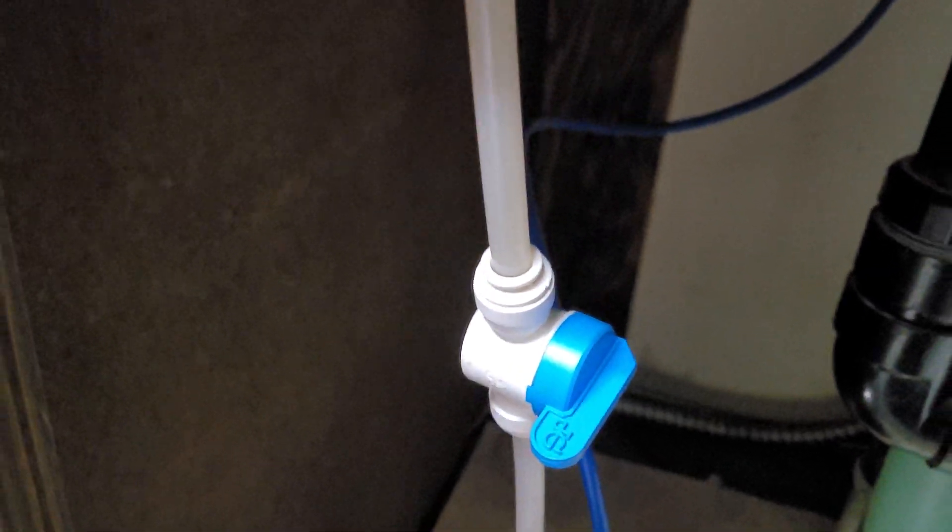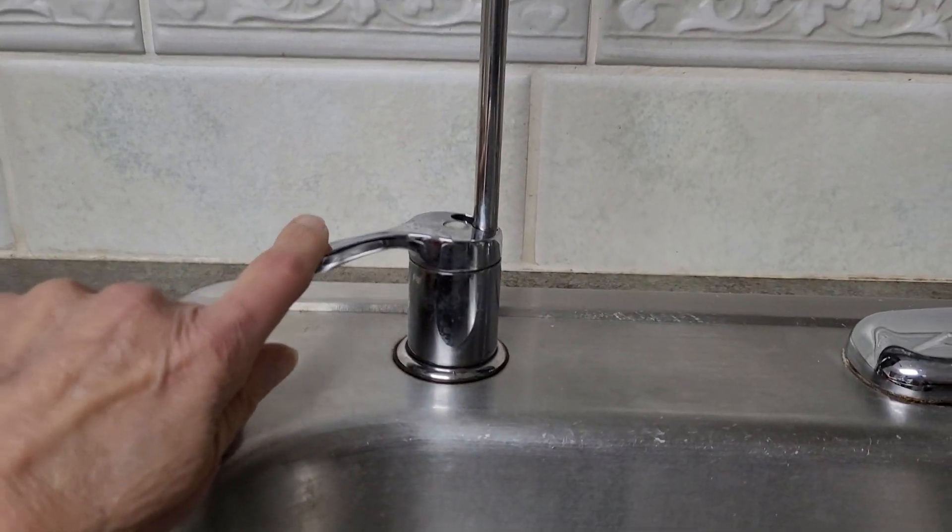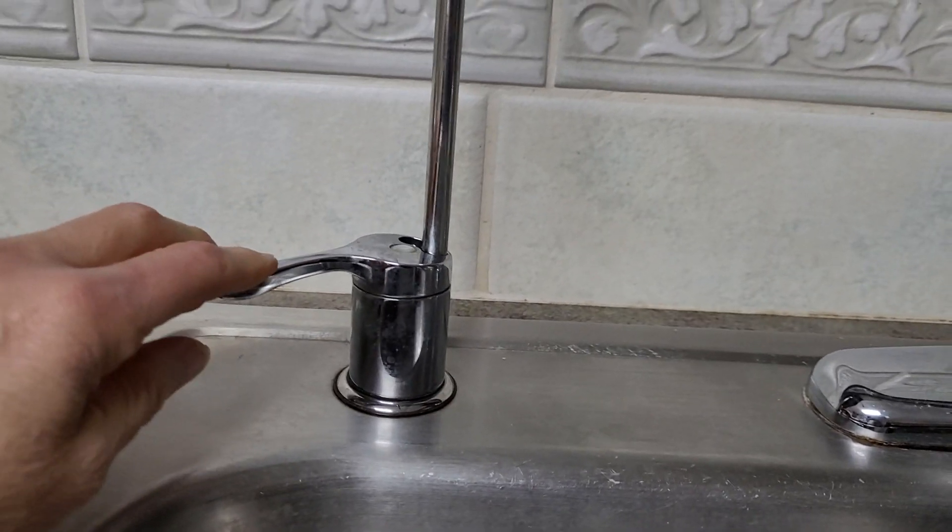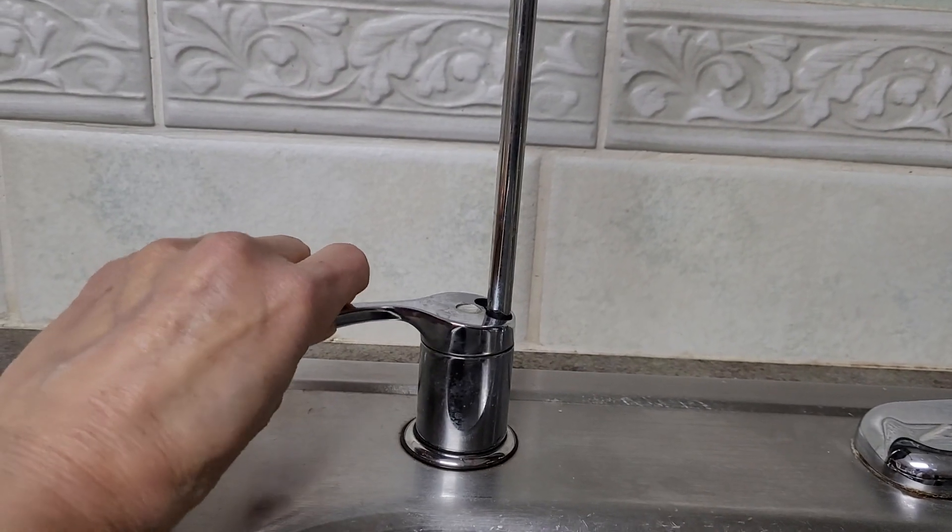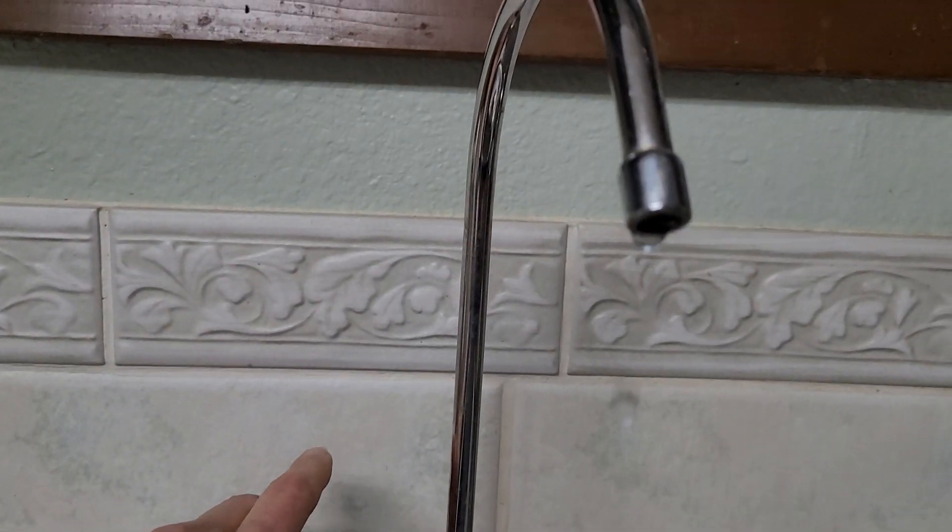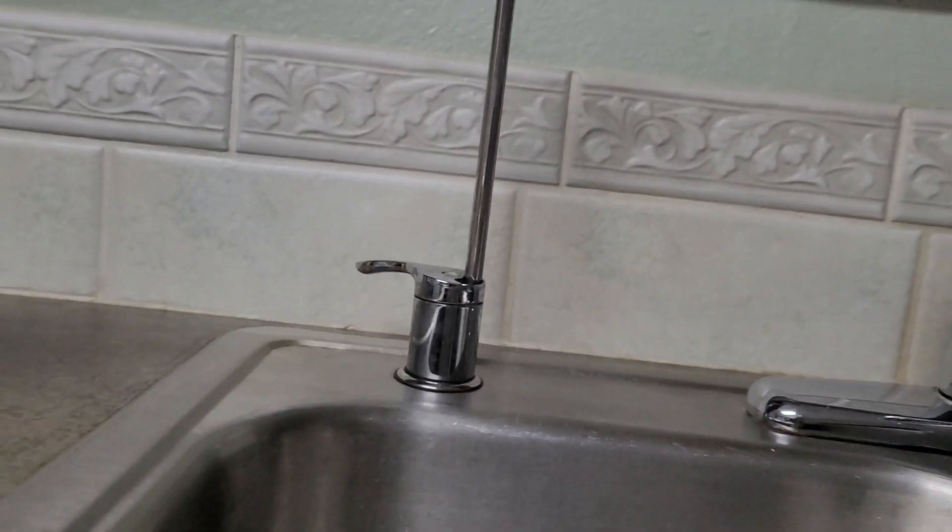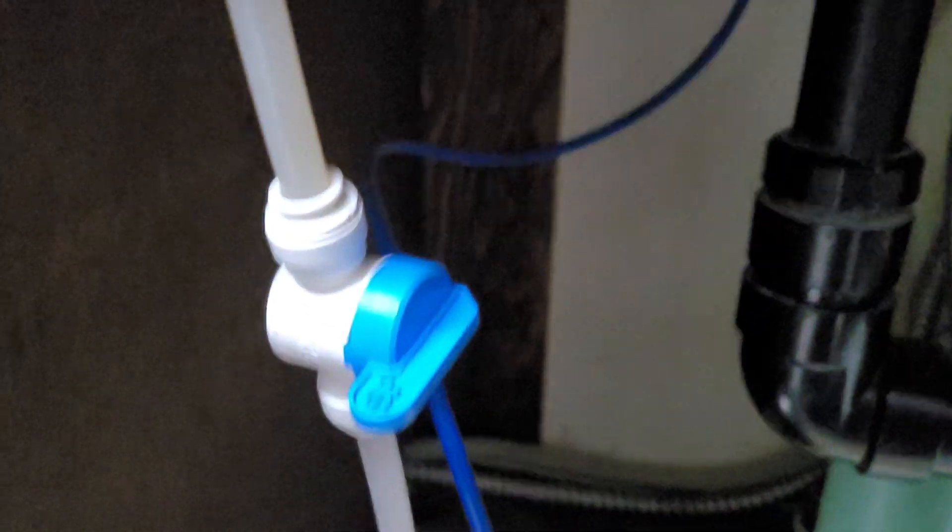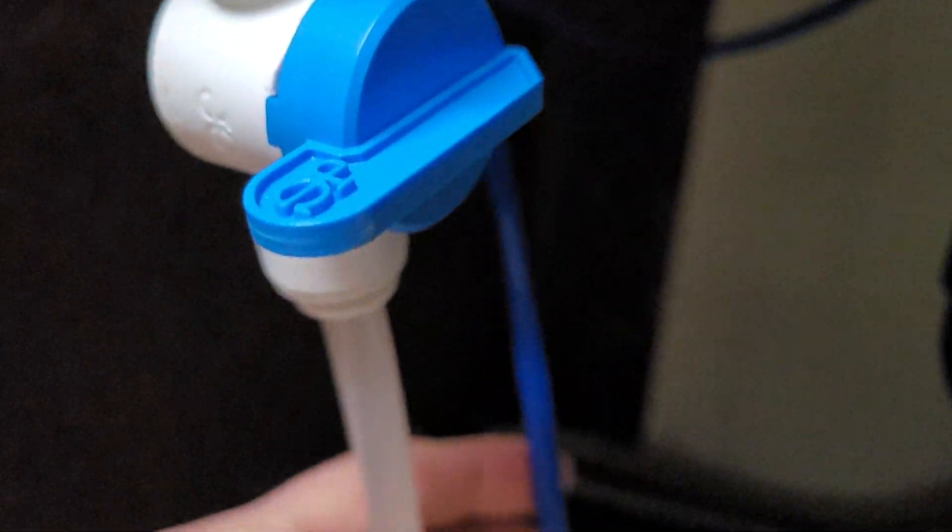Next, what I'm going to do is open the faucet for the Multipure because this is the filtered water only faucet coming up from the filter. I'm just going to turn that on and let that bleed out the line. It will just drip out a little bit. The blue tubing here is what goes up to the faucet.